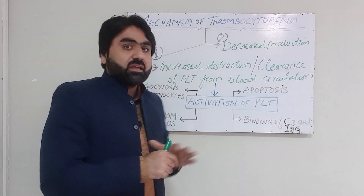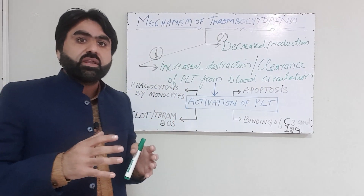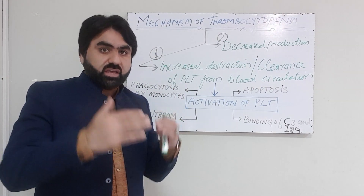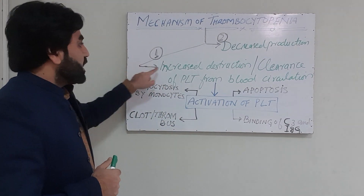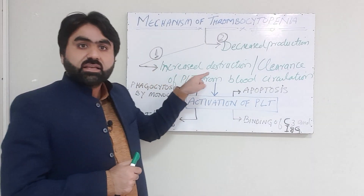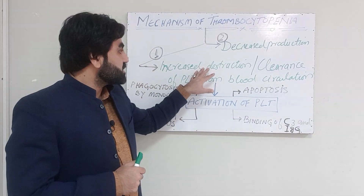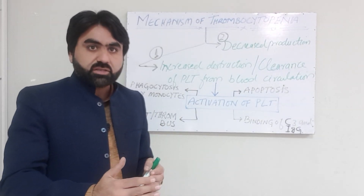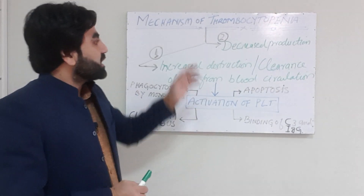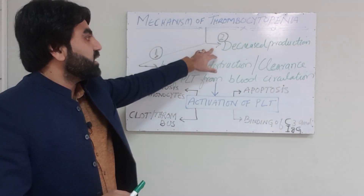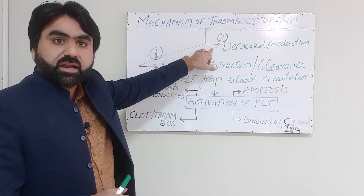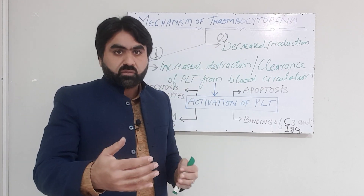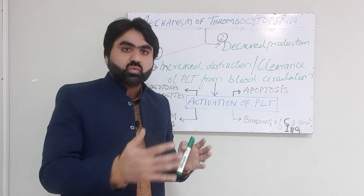Primarily, thrombocytopenia depends upon two events. The first event is the increased destruction or clearance of platelets from blood circulation, while the second event is the decreased production of platelets in the bone marrow. We will discuss these one by one.